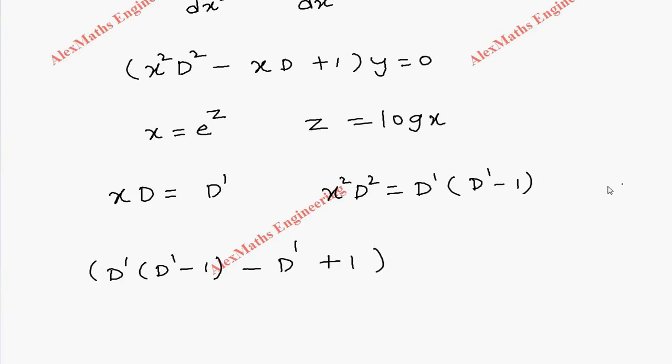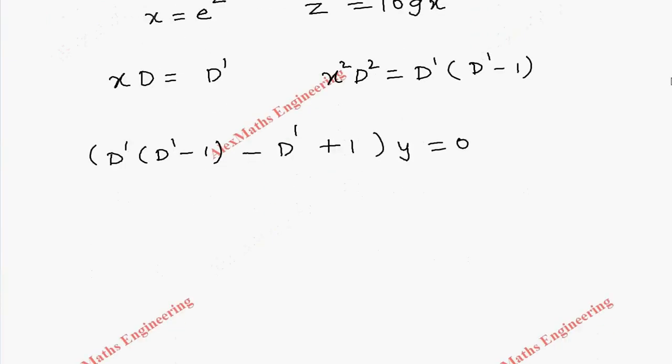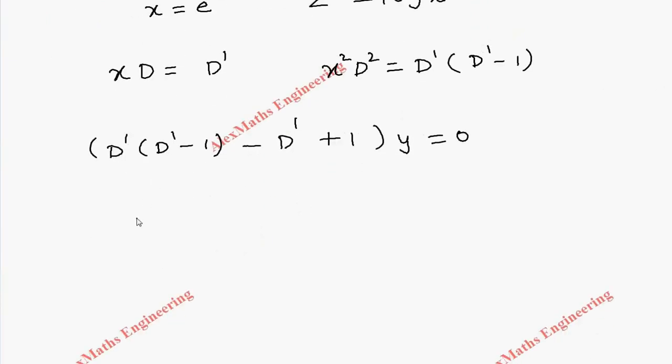Now we multiply this D' inside, so (D')² minus D', here one more D' plus 1, into y equals 0.